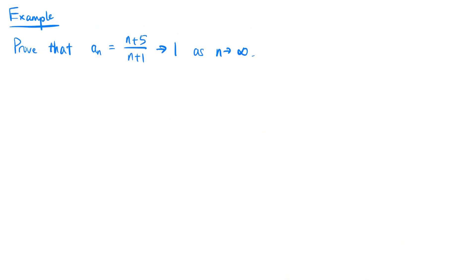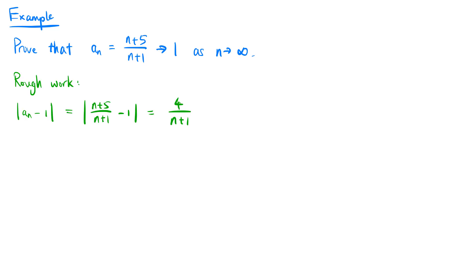Let's use these steps to prove a harder example. Suppose we want to prove that the sequence an, which is n plus 5 over n plus 1, converges to 1 as n tends to infinity. To start, we simplify the absolute value of an minus 1. This equals the absolute value of (n plus 5) over (n plus 1) minus 1, which equals 4 over (n plus 1).